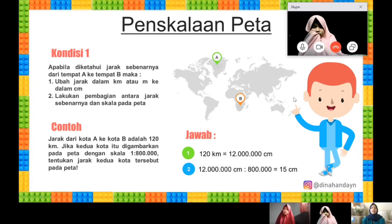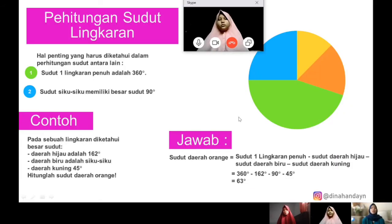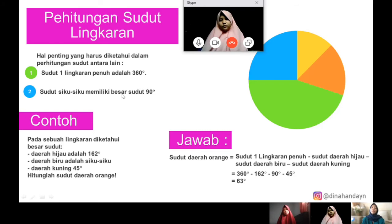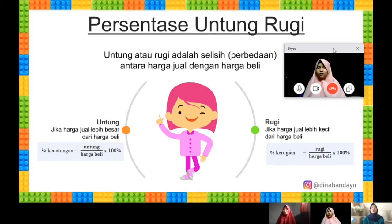Pada persamaan peta biasanya terdapat dua kondisi: kondisi pertama dan kondisi kedua. Selanjutnya, dalam perhitungan sudut lingkaran, hal penting yang harus diketahui yaitu sudut sebuah lingkaran penuh adalah 360 derajat, dan siku-siku memiliki besar 90 derajat. Dalam gambar ini, siku-siku digambarkan dengan gambar yang memiliki warna biru, sehingga besar derajat yang warna birunya adalah 90 derajat.